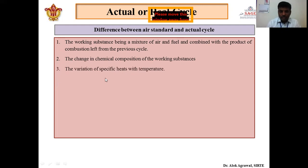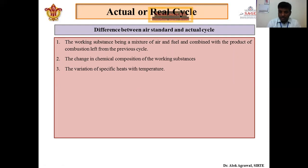Another difference is the variation of specific heat with temperature. In the air standard cycle we assume that specific heat remains constant throughout all strokes of the cycle. But this is not the case — specific heat is very much dependent on the temperature of the system. As temperature increases, specific heat also increases. This is another criterion that must be considered when studying the actual cycle.